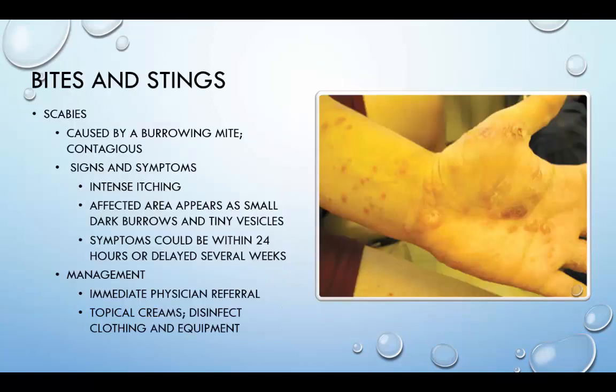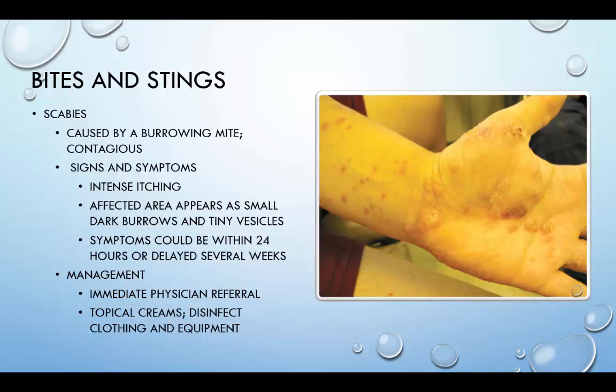Scabies is caused by a burrowing mite, which produces severe, intensely itching lesions in the area that it burrows. Signs and symptoms include intense itching, and affected areas will appear as small, tiny burrows with tiny vesicles. Symptoms could appear within 24 hours or be delayed for several weeks. Management includes immediate physician referral, topical creams, and disinfecting clothing and equipment. Lice can occur on the body, head, and genitals, spread by close physical contact. They can take 10 days for the nit to hatch. Signs and symptoms include nighttime itching, subsequent scratching, pustules, and excoriation. Management includes topical lotions and shampoos and disinfecting clothing and equipment.